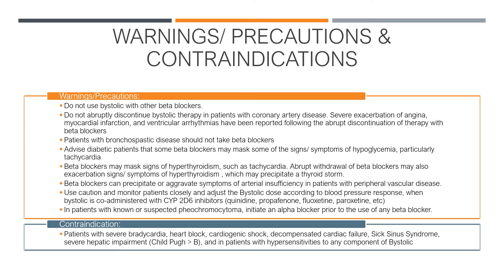Warnings and precautions for Bystolic: Do not use Bystolic with other beta blockers. Do not abruptly discontinue Bystolic therapy in patients with coronary artery disease — severe exacerbation of angina, myocardial infarction, and ventricular arrhythmias have been reported following abrupt discontinuation of beta blockers. Patients with bronchospastic disease should not take beta blockers. Advise diabetic patients that some beta blockers may mask signs and symptoms of hypoglycemia, particularly tachycardia. Beta blockers may also mask signs of hypothyroidism such as tachycardia, and abrupt withdrawal may exacerbate hypothyroid symptoms, which may precipitate a thyroid storm. Beta blockers can also precipitate or aggravate symptoms of arterial insufficiency in patients with peripheral vascular disease.